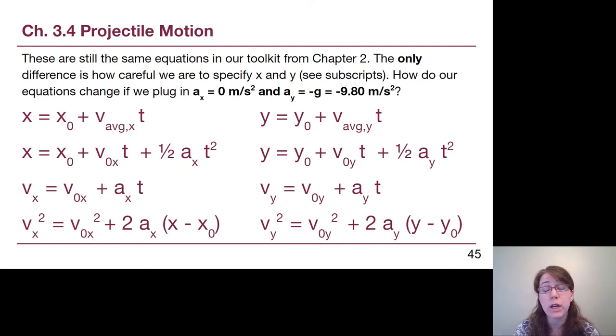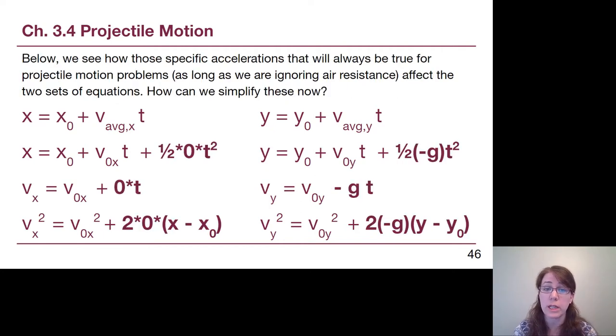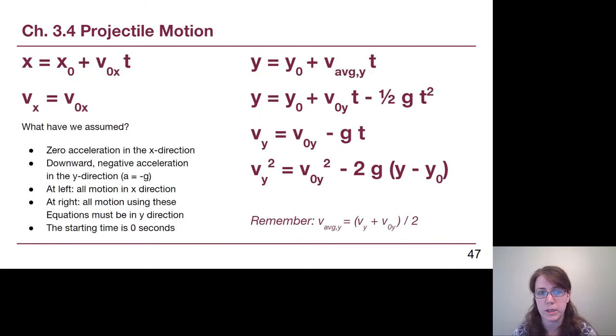The first step is if we plug in the accelerations we know that projectile motion has, these simplify a little bit. A lot of terms on the left go to zero, and a lot of terms on the right now look very similar to what we've been using, but we've built in the negative sign and called it negative g. If we simplify these terms and get rid of the ones that have gone to zero, we also want to recognize that in the x set of equations, the very bottom equation becomes v_x squared equals v_initial_x squared, which is identical in meaning to v_x equals v_initial_x. This is where we get to when we do those simplifications.